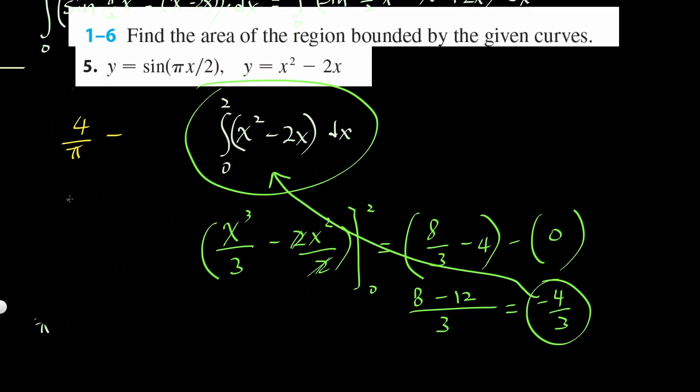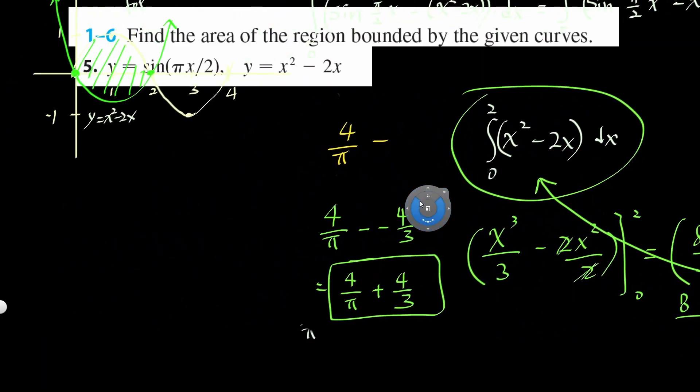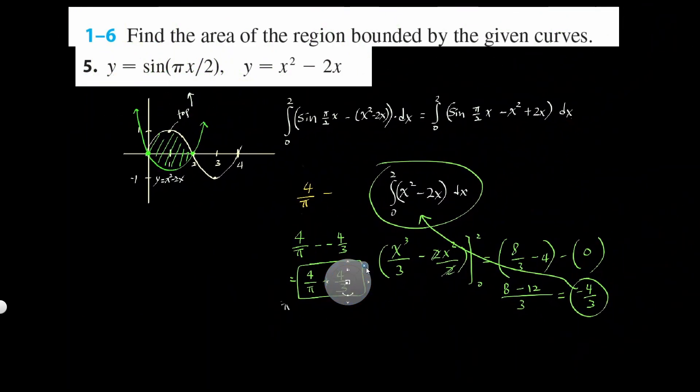So ultimately, we got 4 over π minus negative 4 over 3, which becomes 4 over π plus 4 over 3. That's the area of that bounded region right there.